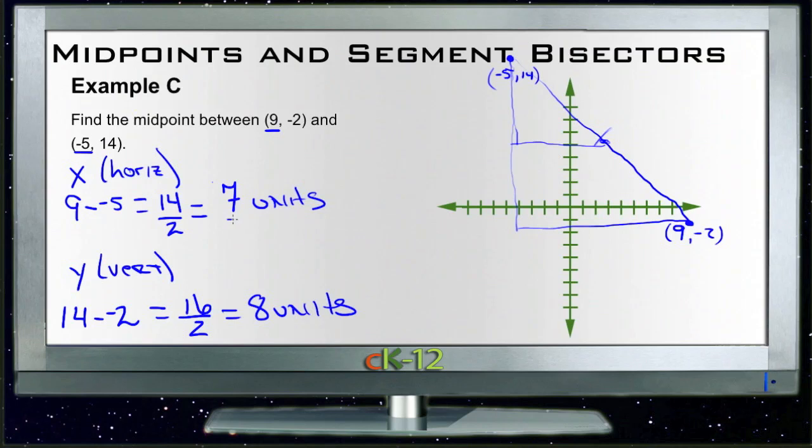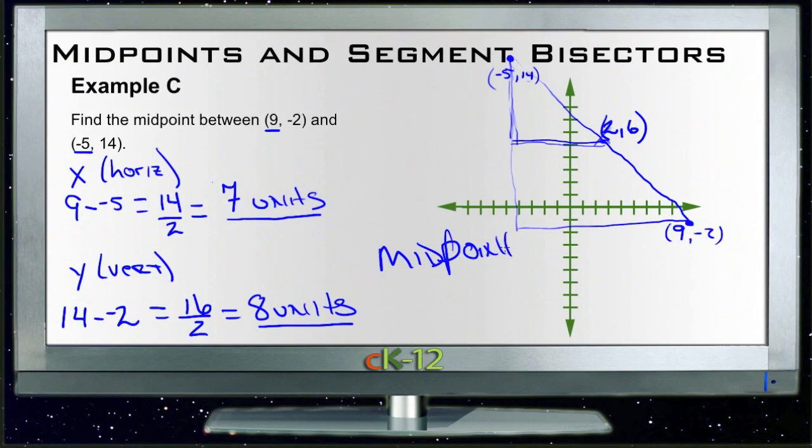So we want to go from one point toward the other 7 units on the x-axis and 8 units on the y-axis. So we're going to go from -5 over, if we're at this location on the x-axis, over 7 units, which would take us to 2. And then we're going to go from 14 and we're going to go down 8 units, which would take us to positive 6. So our midpoint then is the location (2, 6).